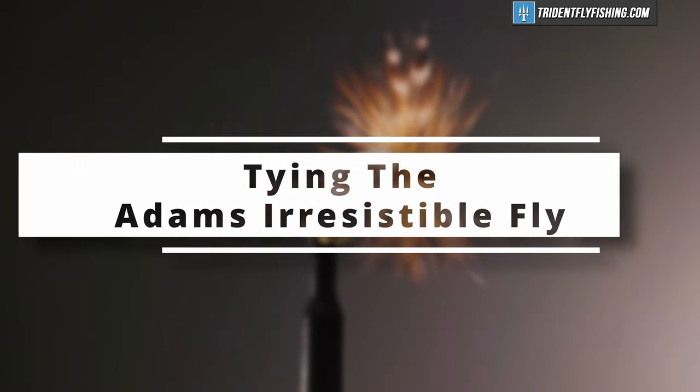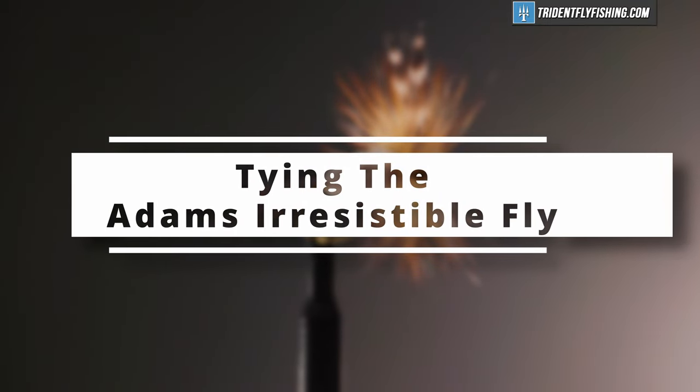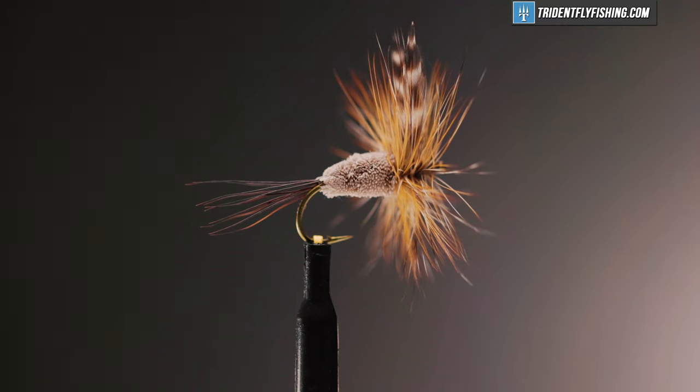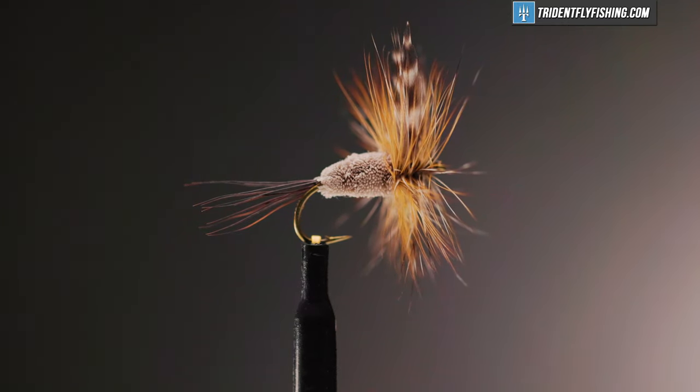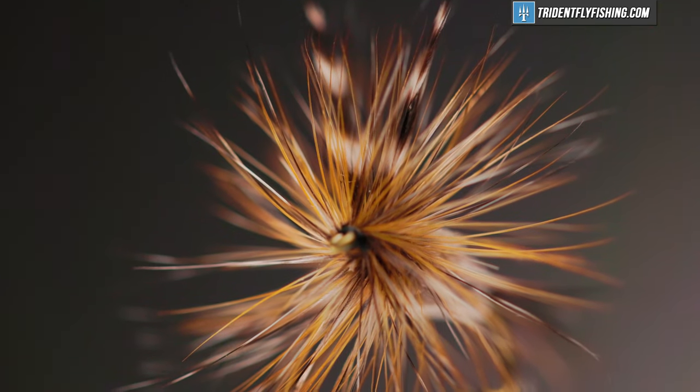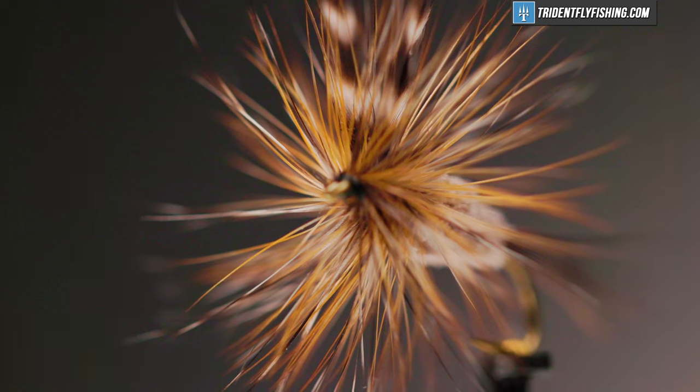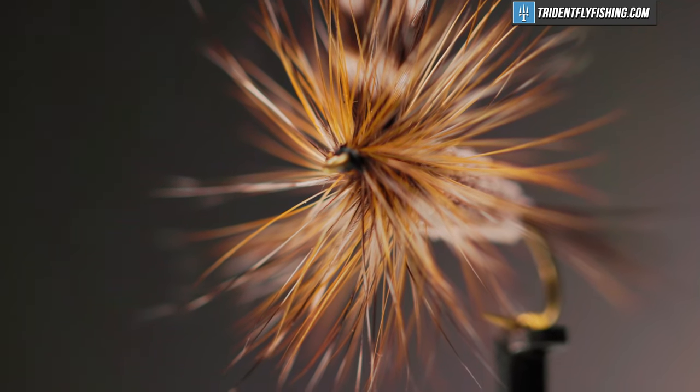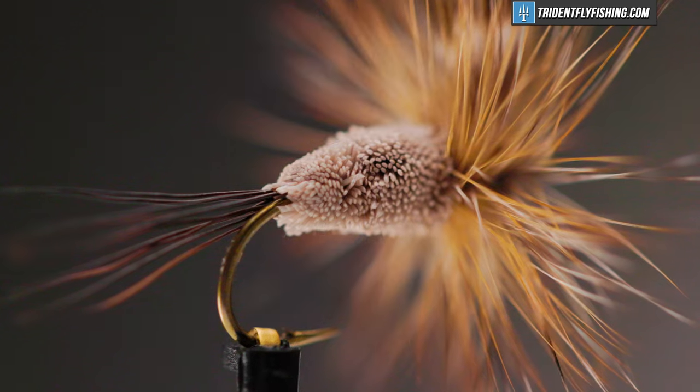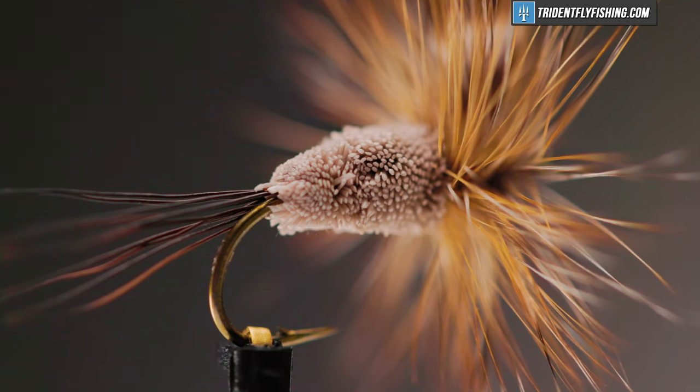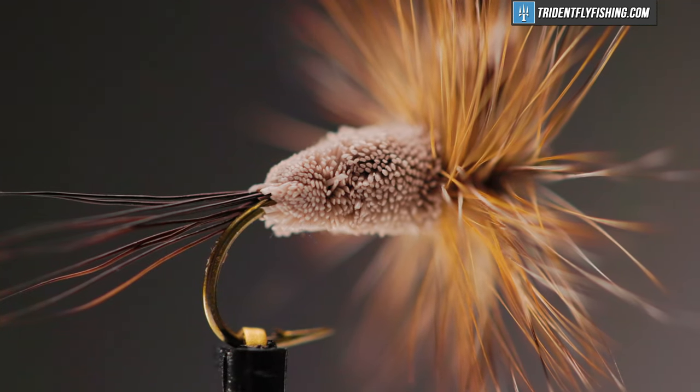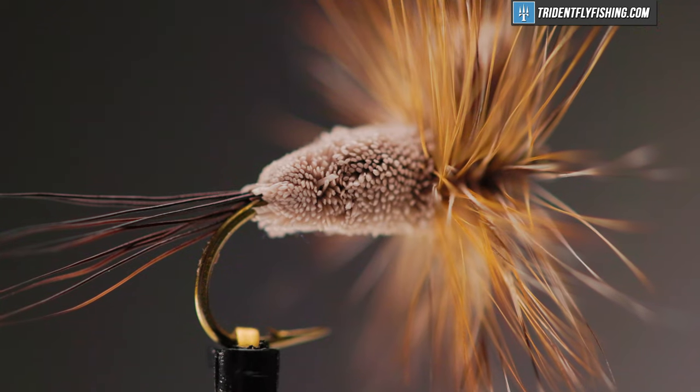The Adams Dry Fly needs no introduction. It's arguably one of the most popular fly patterns out there. It was created in 1922 by a man named Leonard Halliday, and the Irresistible fly with its fat deer hair body was created by Joe Messinger of Morgantown, West Virginia in the 1930s. It floats high and it's great in fast water.